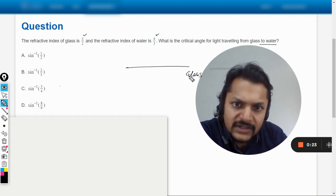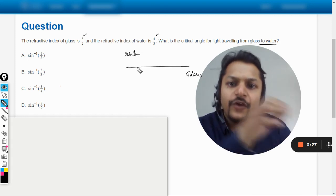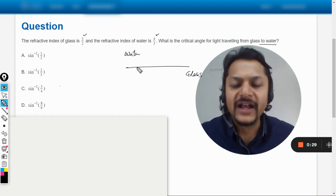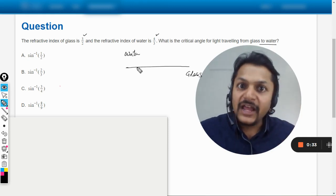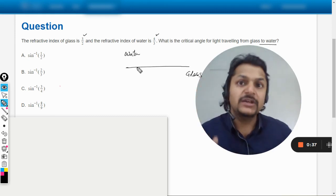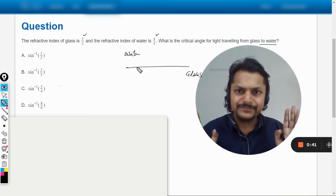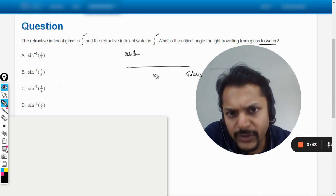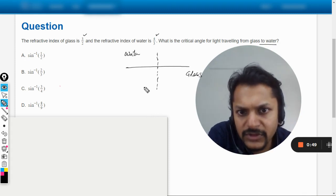So this will be glass and this is going to be water. For total internal reflection to take place, that is where we are talking about critical angle, the light should be coming from the denser medium towards the rarer medium. It should move from denser to rarer, it cannot go from rare to denser. So definitely the light would be coming, it would be hitting this junction from the glass.